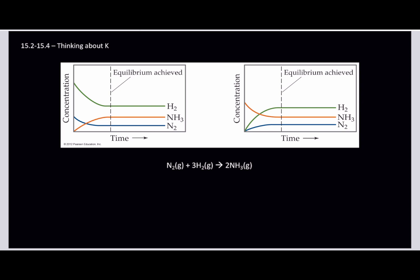Hello, AP Chemistry, and welcome to Chapter 15, Part 2, where we discuss the concept of K and what it means. So first, we loosely defined K way back in Chapter 5 and 19 as the relationship of product over reactant.